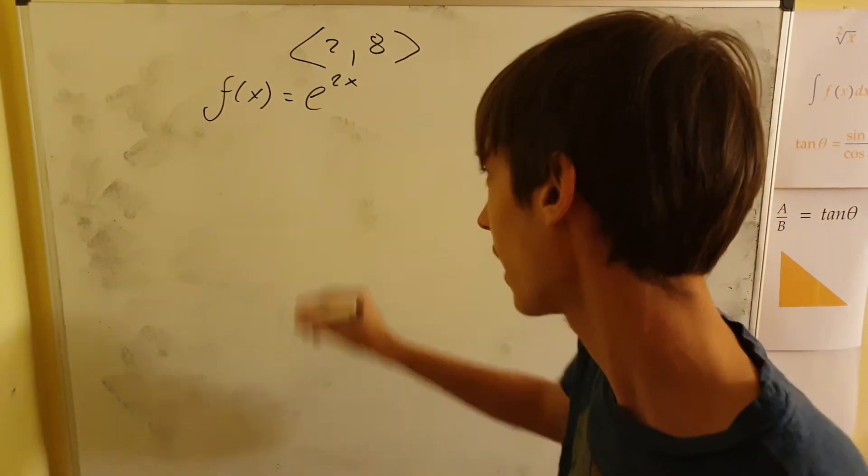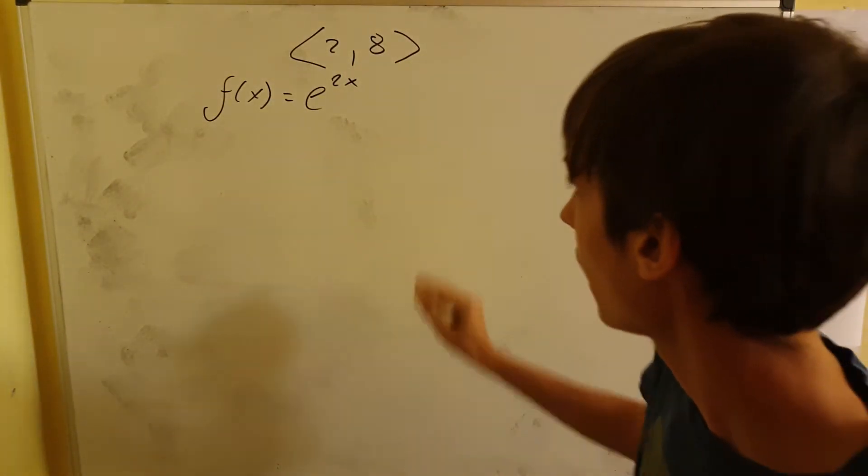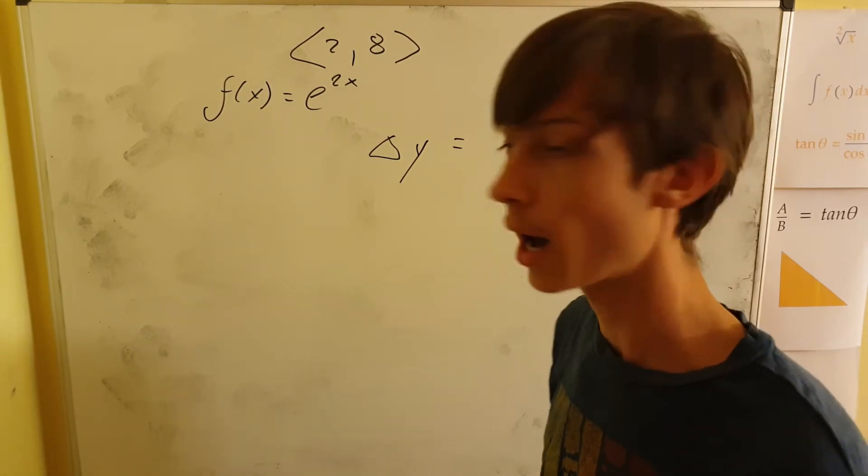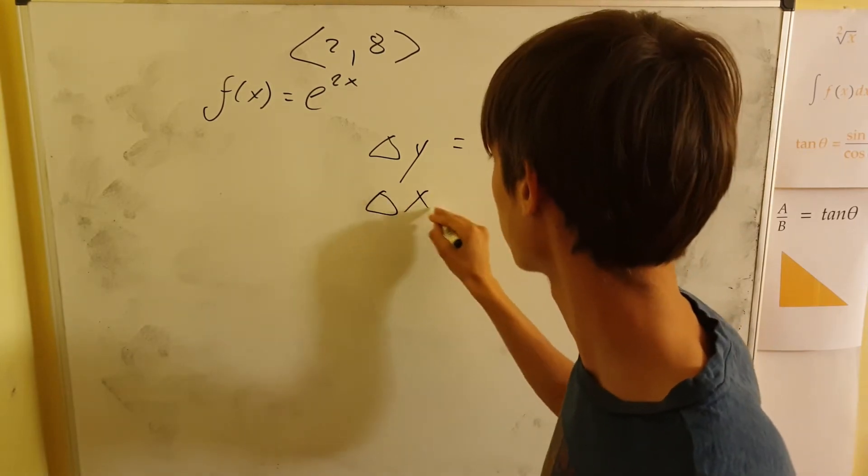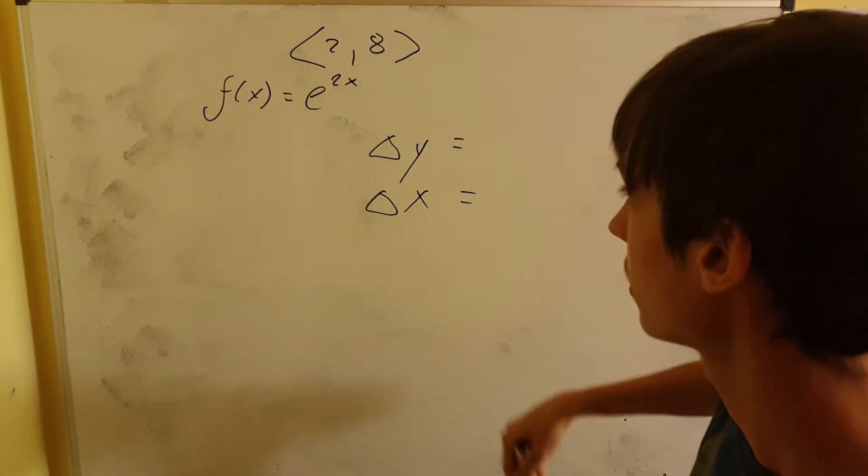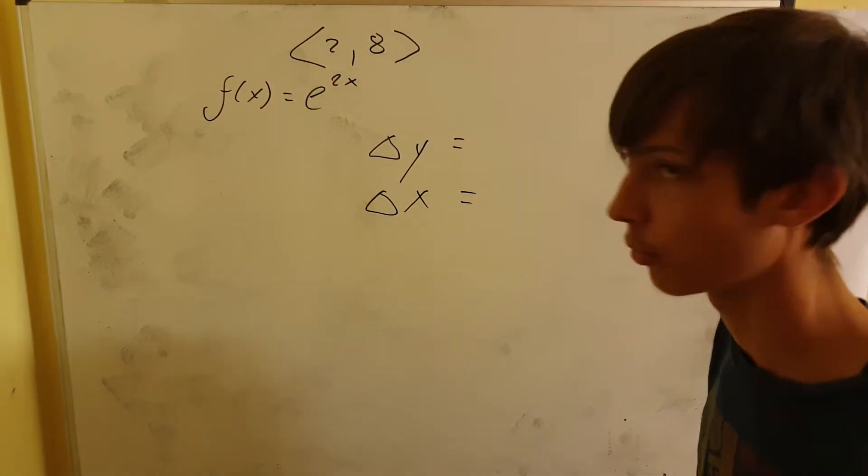This will be interesting. We have this function e to the x, and you're looking for the change in the vertical direction, delta y, and also change in the horizontal direction, delta x - so change in how it goes right and change in how it travels up or down.